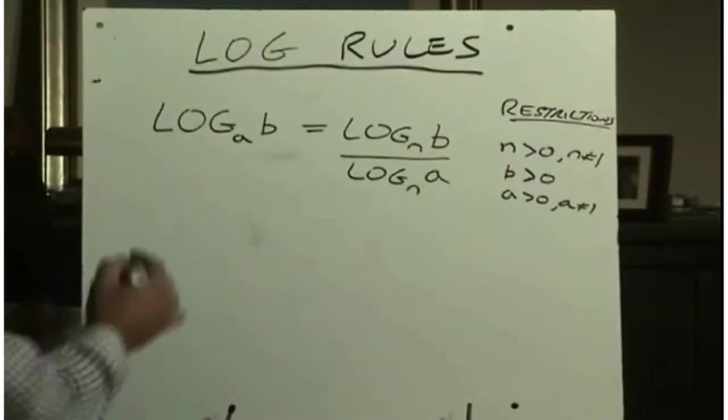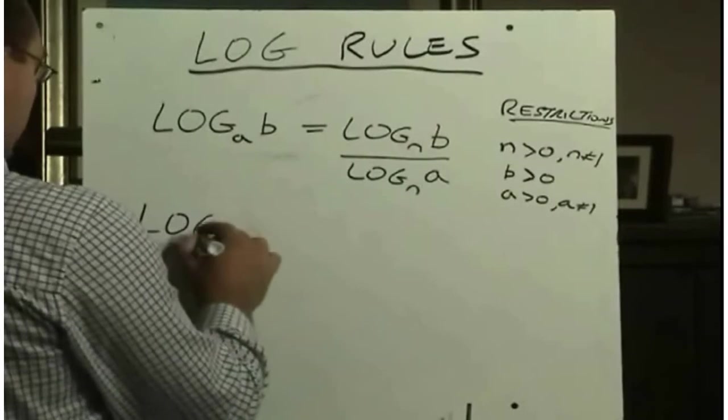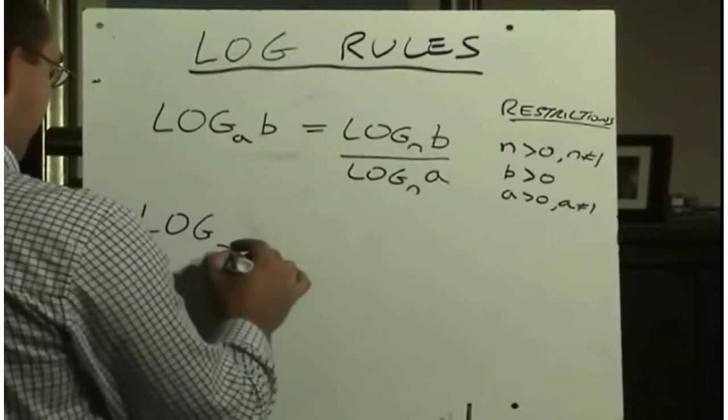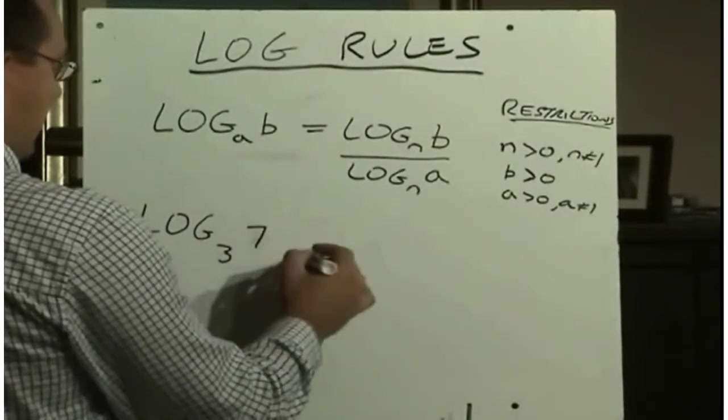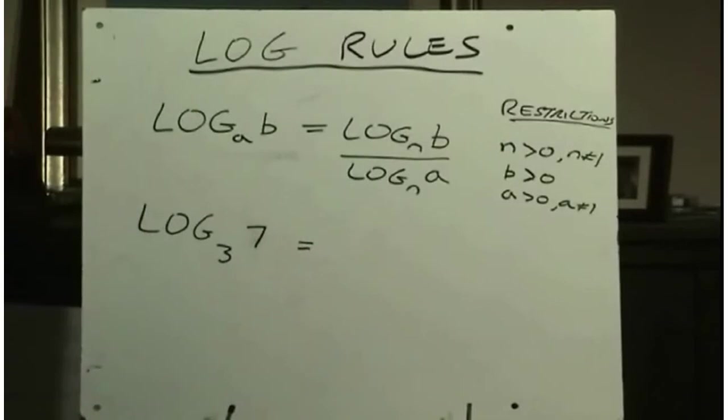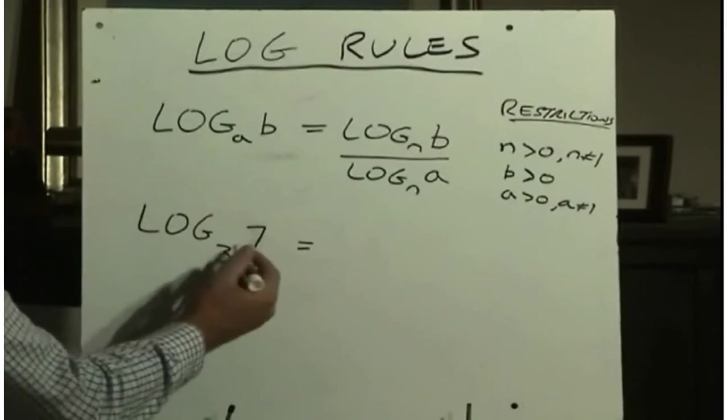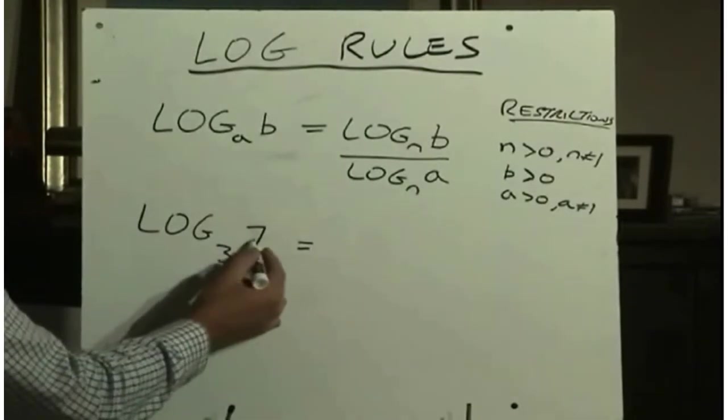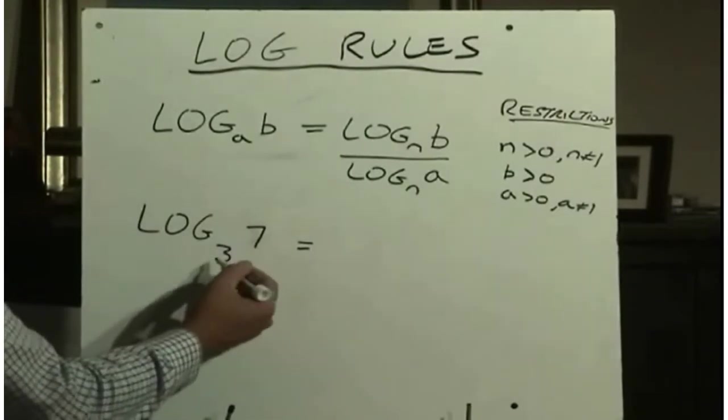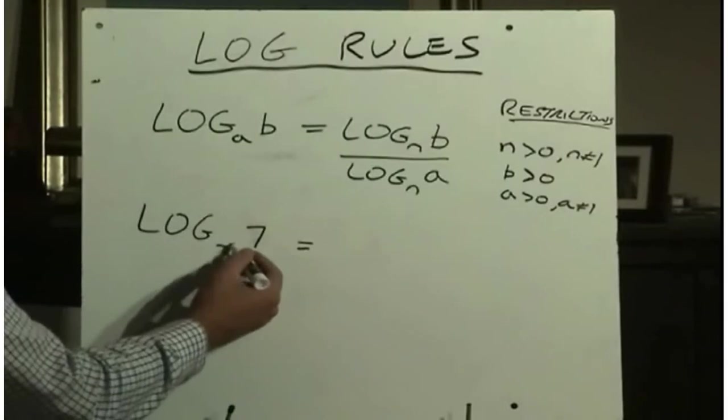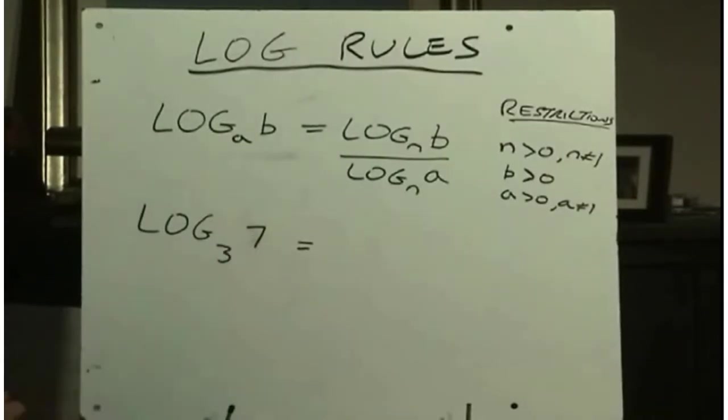So where this is really important is if we have this. So say we had to figure out what is log base 3 of 7. Well log base 3 of 7, we know that if the exponent were 2, 3 squared would equal 9, so 2 is too big. And log base 3 of 1, well 3 to the power of 1 is only 3, so it's going to be somewhere between 1 and 2.